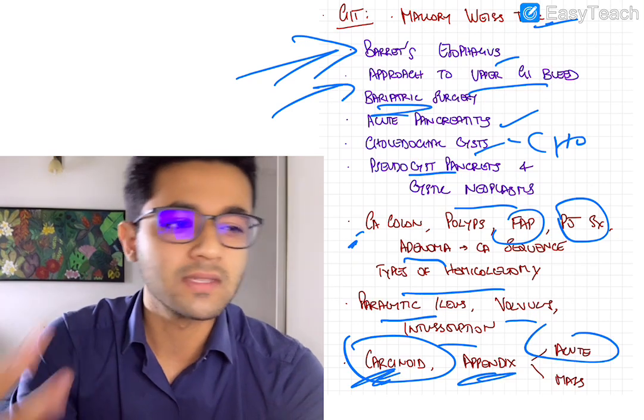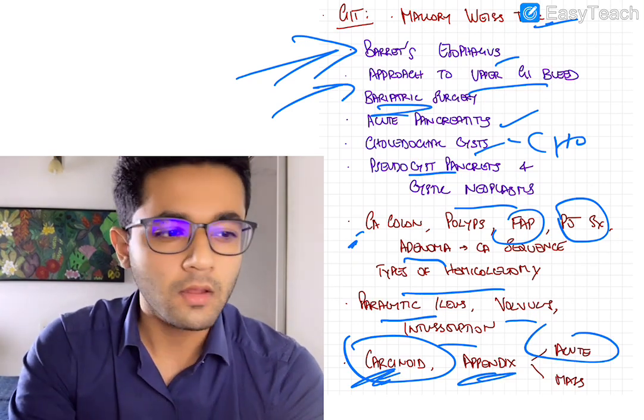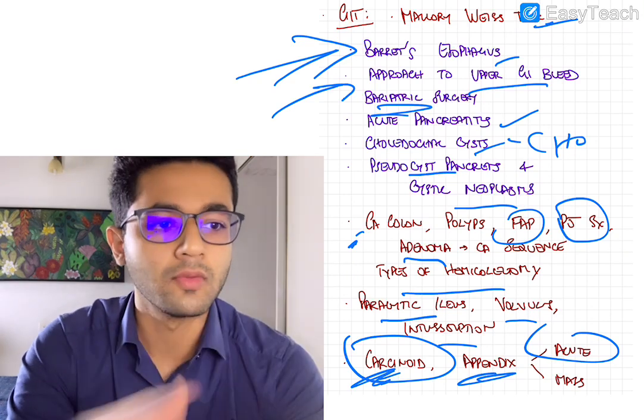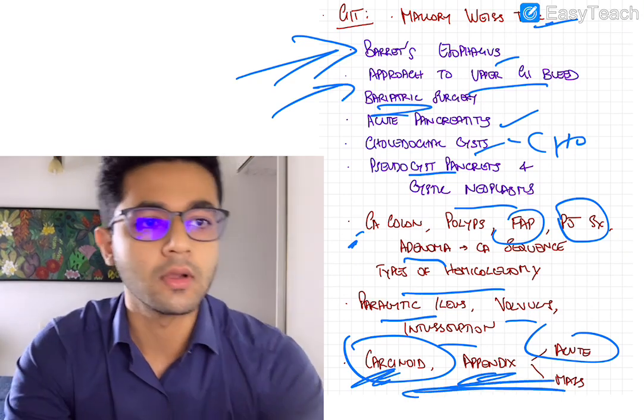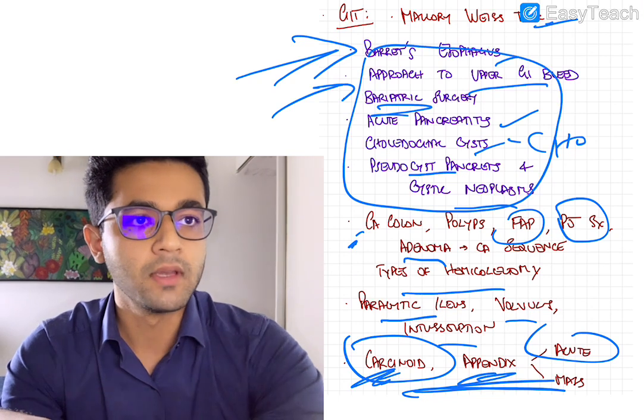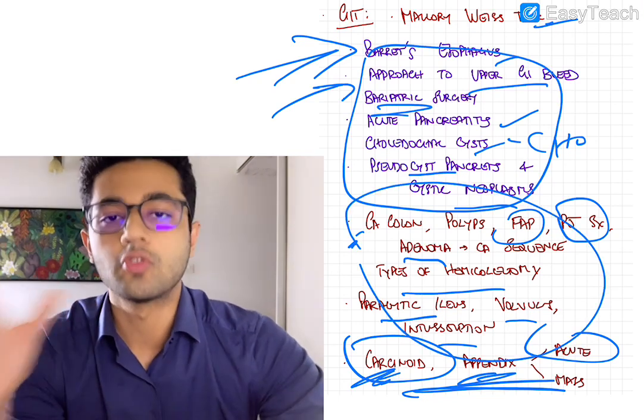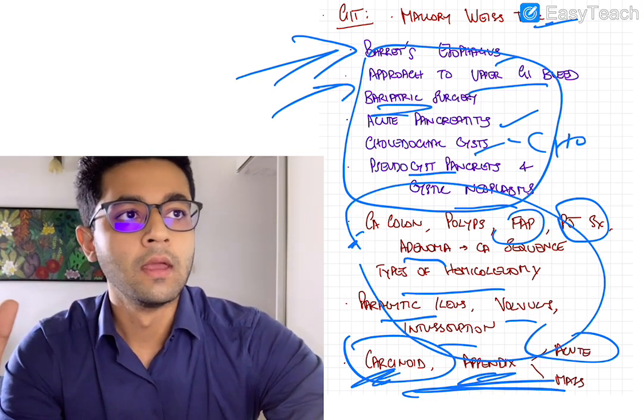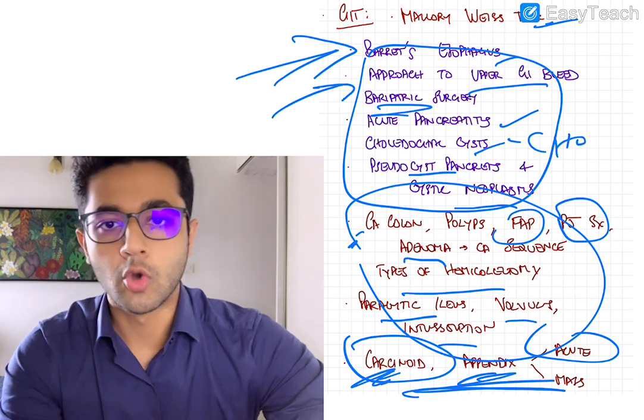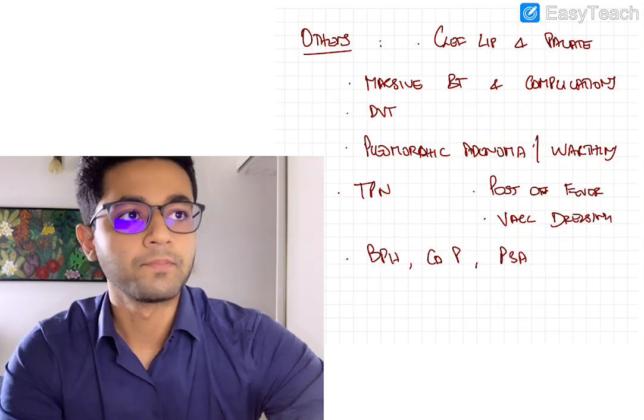Appendix, in appendix, acute appendicitis and your Alvarado score can be important. So those are, these are mildly important. But make sure everything in purple you know really well and even the ones in brown you should know to a good degree. So yeah, these are the must-know topics from GIT.